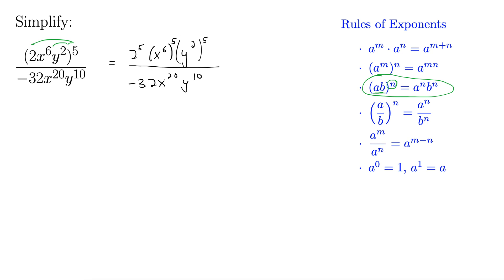A lot of people would just multiply these straight away. Okay, so let's see. 2 to the 5th is 32. Then we have x to the 6th times 5. So now I'm using this second property here. Right, that tells us when I have an exponent taken to another exponent, we multiply the exponents together. So x to the 6 times 5, y to the 2 times 5, same thing.